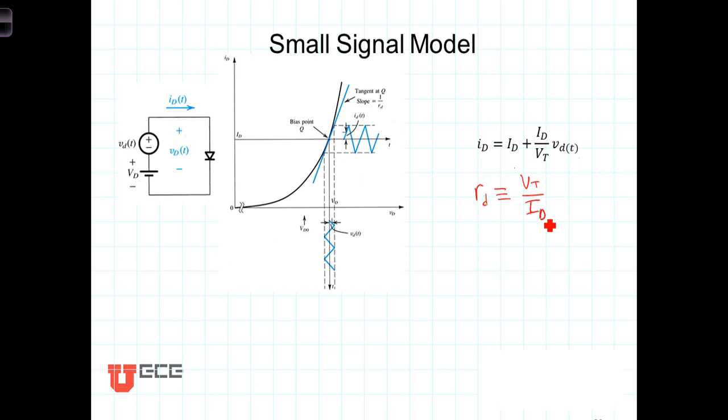Note that this r sub d is proportional to the DC bias current. In other words, that's the current or this r sub d would correspond to this bias point. If we biased it someplace else with a different I sub d, we'd have a different r sub d. r sub d is inversely proportional to the bias current.